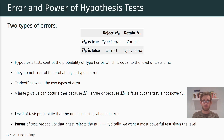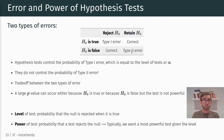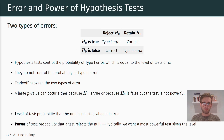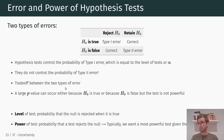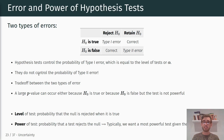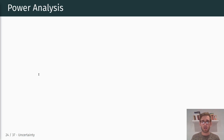We usually assume a standard significance level like 0.05 and want the most powerful test given that significance level. Achieving greater power often involves collecting larger samples — larger samples increase our power to reject false null hypotheses. In order to find out how large our sample needs to be to have sufficient power, that computation and investigation is essentially the essence of power analysis.